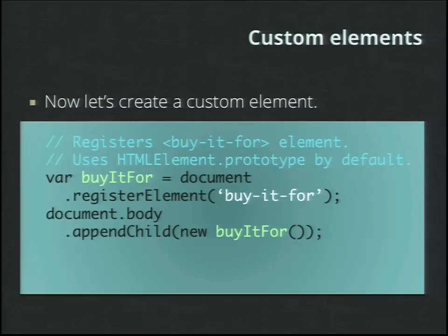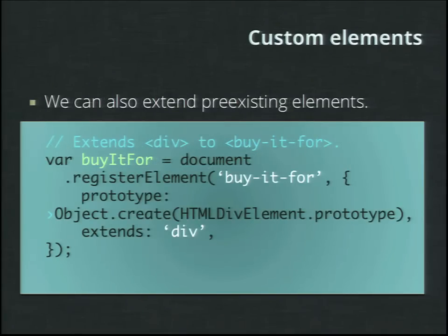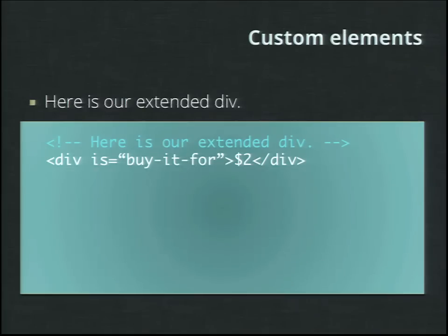To create a custom element, we take the 'buy it for' text and make it a 'buy-it-for' element using an element's prototype — just the lowest-level HTML element prototype — to build this new element we can interact with. You can use this custom element to go ahead and render content. You can also extend pre-existing elements — take a button or a div, access that element's prototype, and assign it to the document to extend elements that already exist, using the 'is' attribute to show that's taking place.